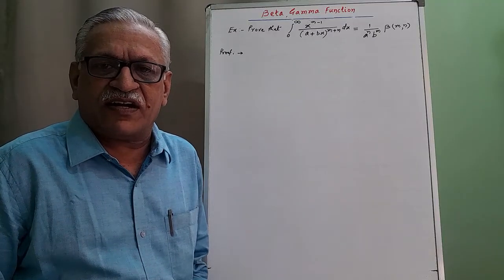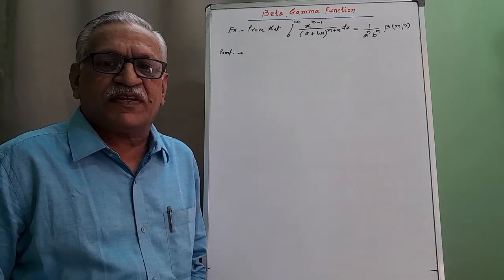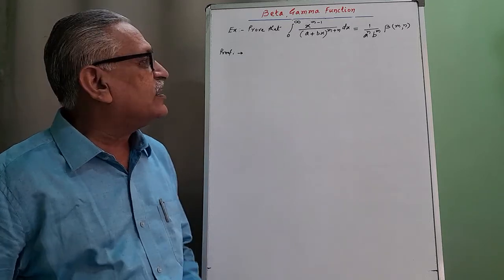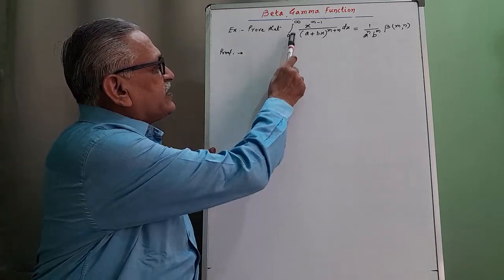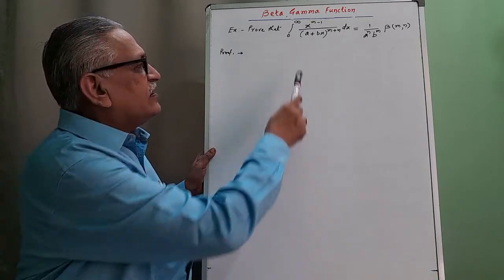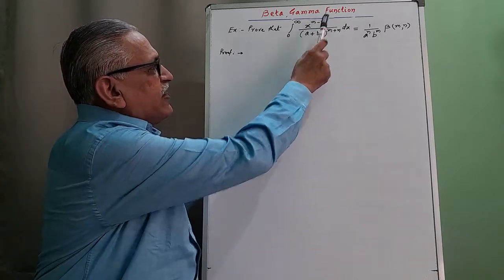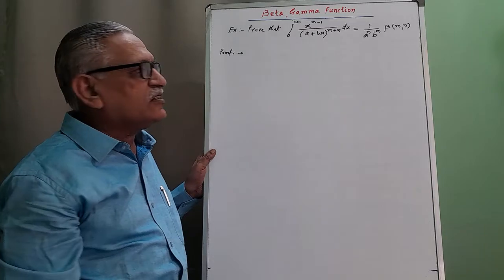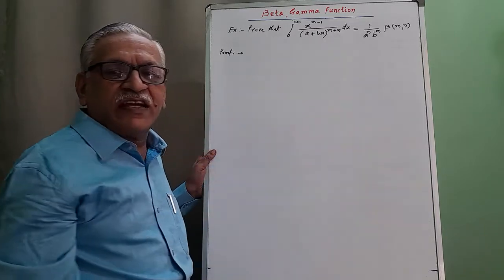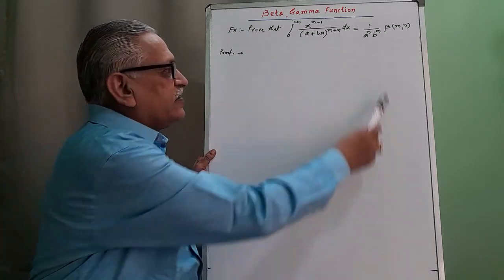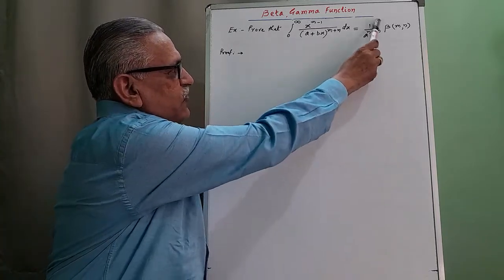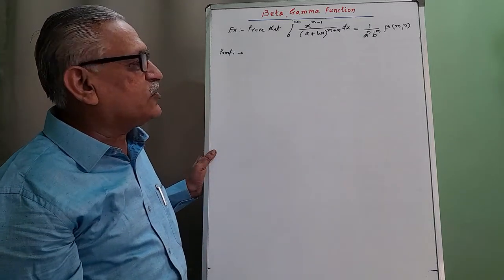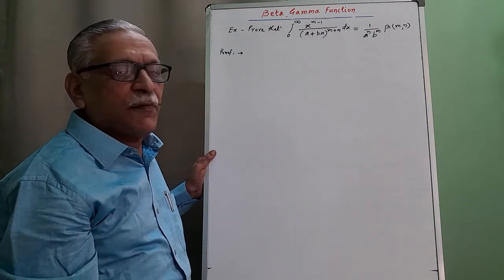Hello friends, myself R.D. Mazal presenting my video on beta gamma function. Let us prove that the integral from 0 to infinity of x to the m minus 1 divided by (a plus bx) raised to m plus n, with respect to x, is equal to 1 upon a raised to n into b raised to m, times beta of m, n.